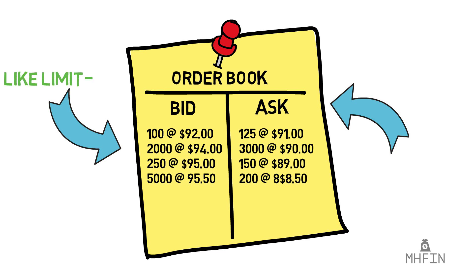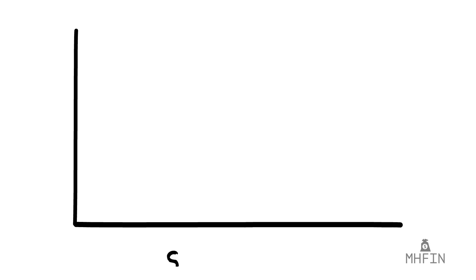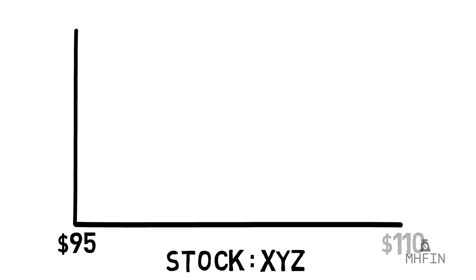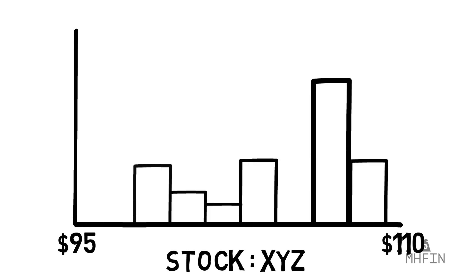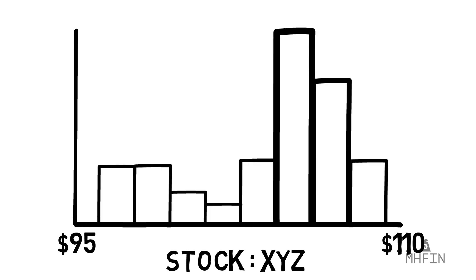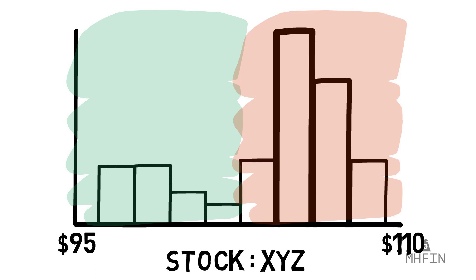Level 2 data is unique because it shows more than just the best bid and best ask on the market. It also shows the full depth of orders on the market, including quantities at the individual bids and asks. This is why Level 2 charts look the way they do. On the bottom along the x-axis you have the price, and above that you have the quantity of stocks ready to be sold and bought at that particular price point. The left-hand side represents buying and the right selling, and right in the middle where the two sides meet, you have the actual current price of the stock.